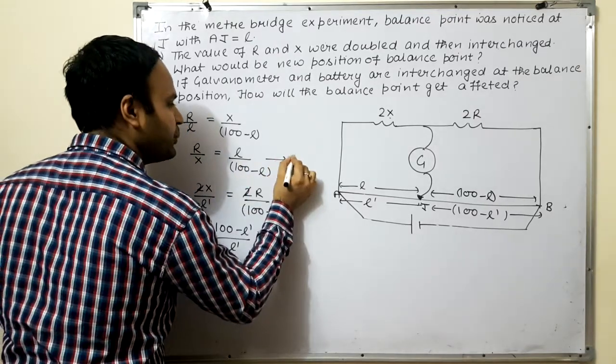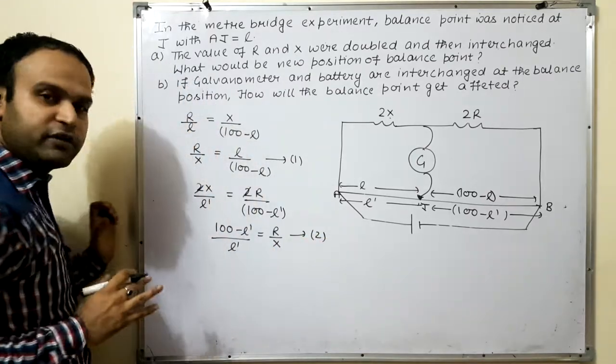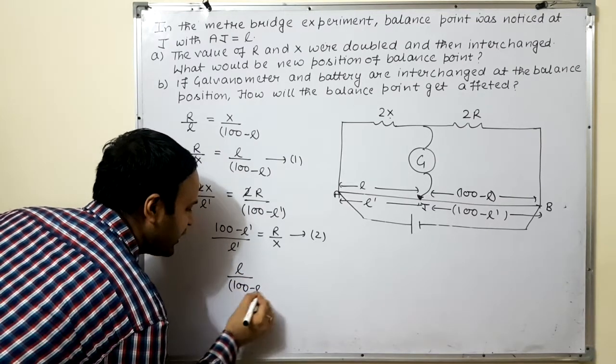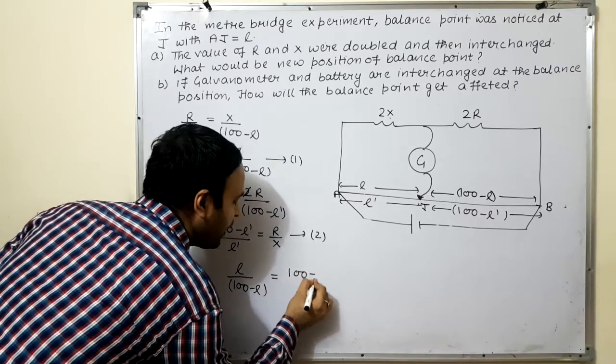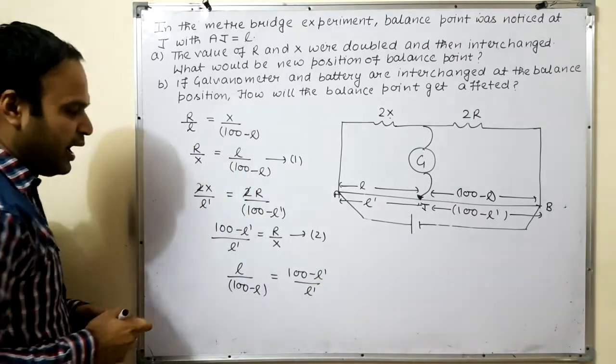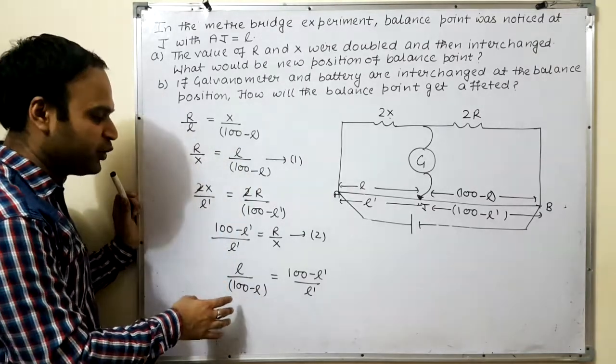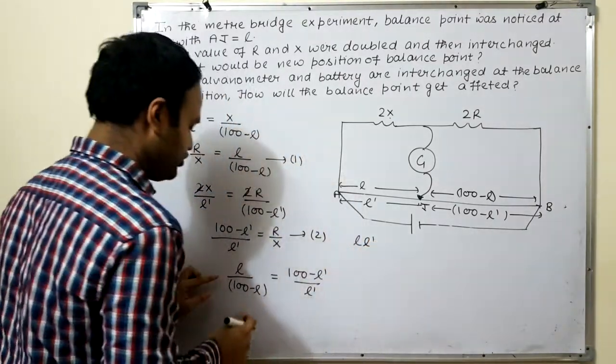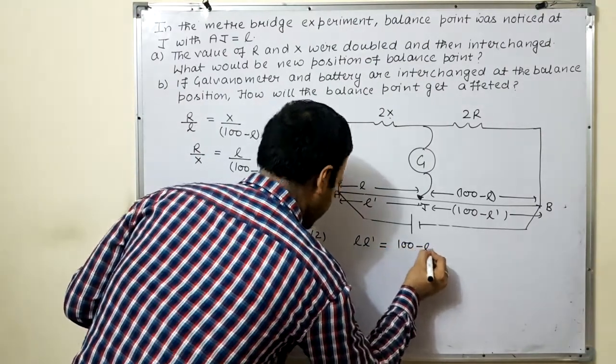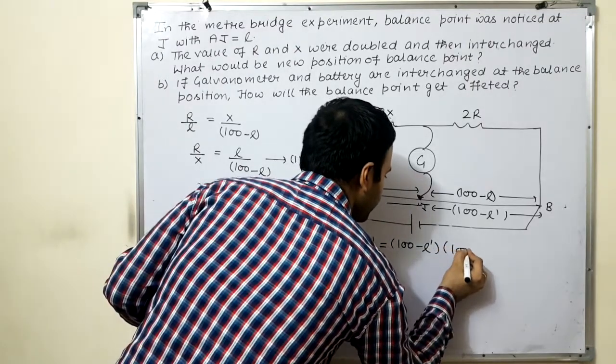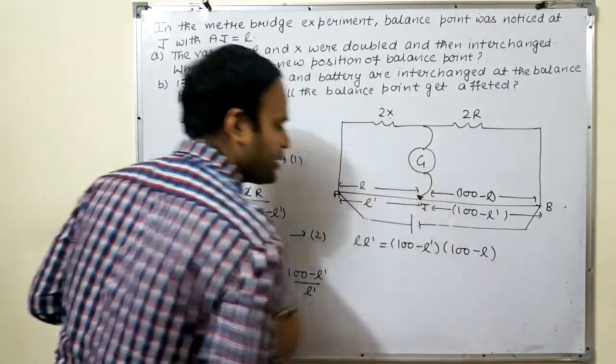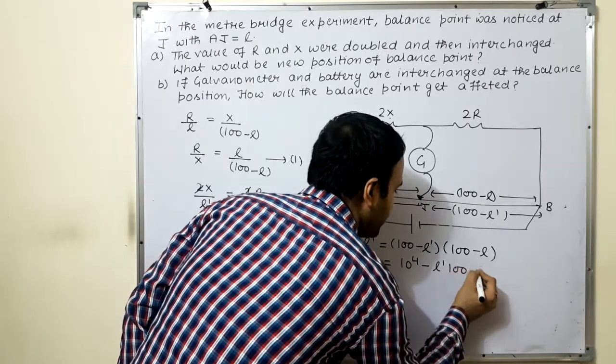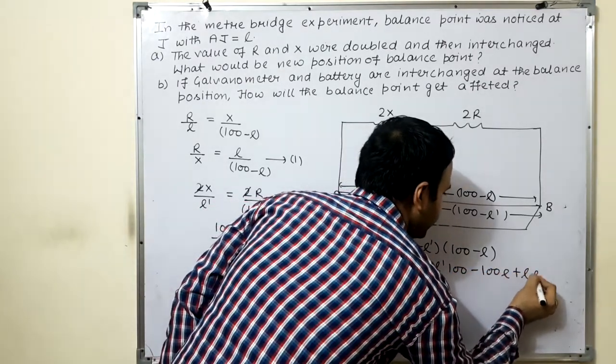This one is equation number 1 and this is equation number 2. Then I will equate both. So L by 100 minus L equal to 100 minus L dash by L dash. Here we have to find L dash value in terms of L. So I will cross multiply: L into L dash equal to 100 minus L dash into 100 minus L.